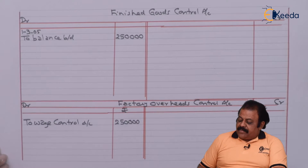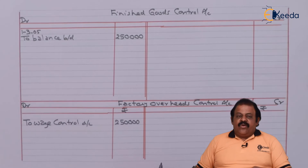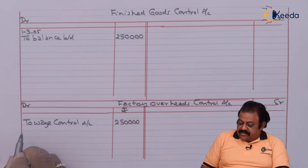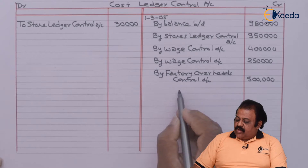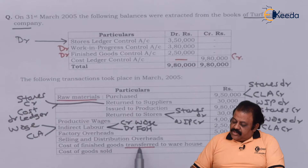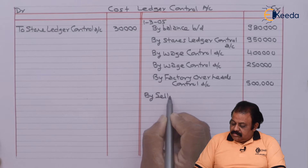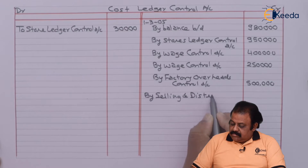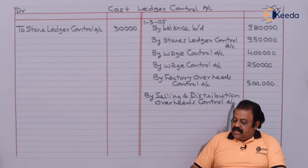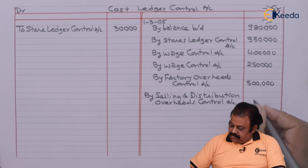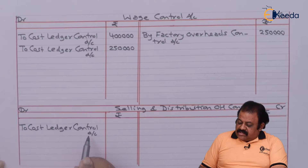Factory overheads control account debit to wage control account 2,50,000. Factory overheads 5,00,000: it will be debited to factory overheads control account; second effect — cost ledger control account credit by factory overheads control account 5,00,000. Selling and distribution overheads 4,00,000: it will be credited to cost ledger control account by selling and distribution overheads control account 4,00,000.